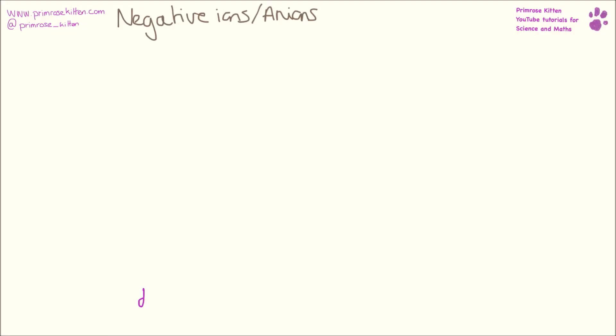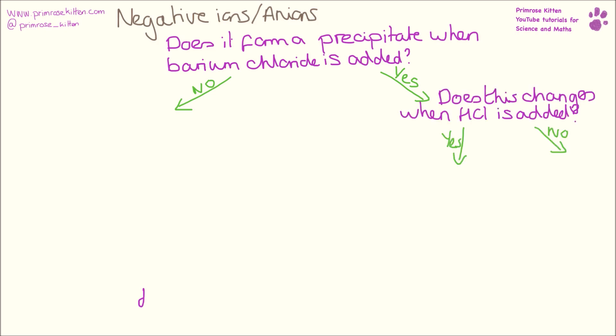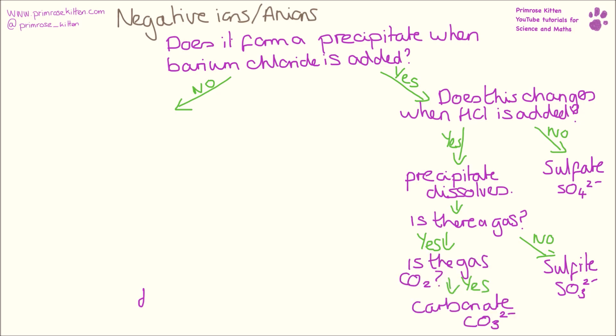We are going to start by looking at negative ions. Does it form a precipitate when barium chloride is added? If yes, does this precipitate change when hydrochloric acid is added? If there is no change, it is a sulfate ion. If the precipitate dissolves, is there a gas coming off? If there is no gas, it is a sulfite ion. If there is gas coming off and it tests positive with lime water, it is a carbonate ion.